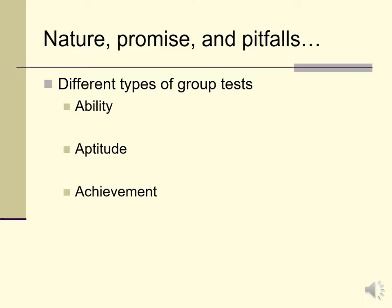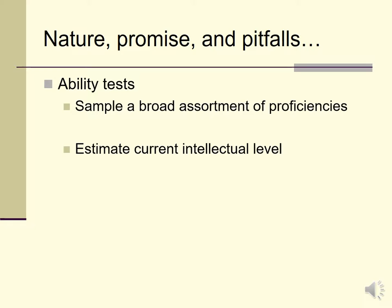Here we're talking about different types of group tests: ability tests, aptitude tests, and achievement tests. When I say ability tests, I mean tests which sample a broad range of proficiencies and try to estimate your level of intellectual or mental ability — how much you can, at least in principle, learn, acquire, and ultimately achieve in the world, or at least in the world of school-related performance.